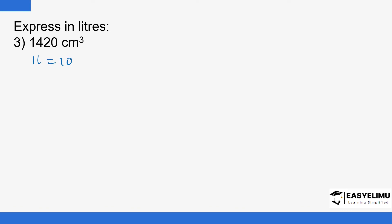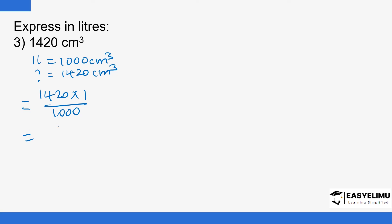One liter equals one thousand cubic centimeters. What about 1420 cubic centimeters — how many liters will this be? You cross multiply: 1420 by one, then divide by one thousand. 1420 divided by one thousand — this is where the decimal point is for a whole number, so you move it to the left three times: one, two, three. The decimal point sits between the one and the four, so that is 1.42 liters.